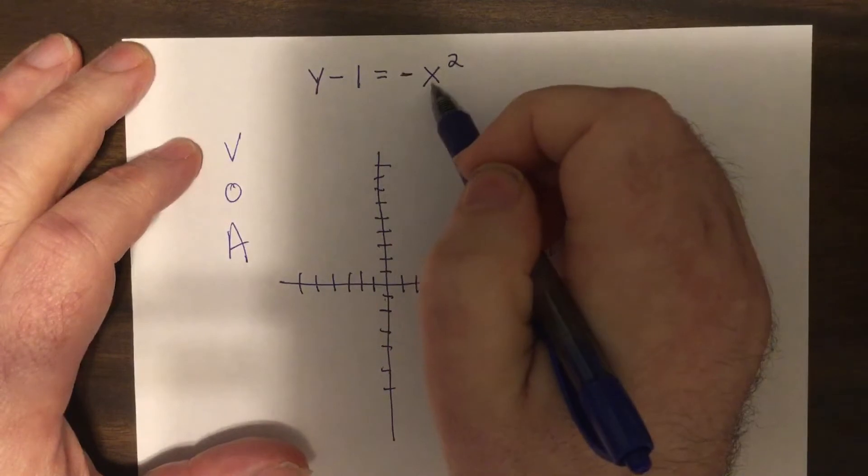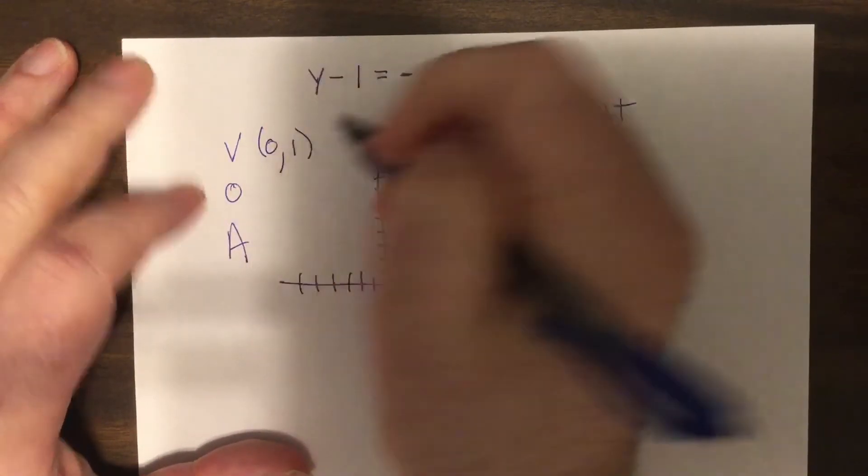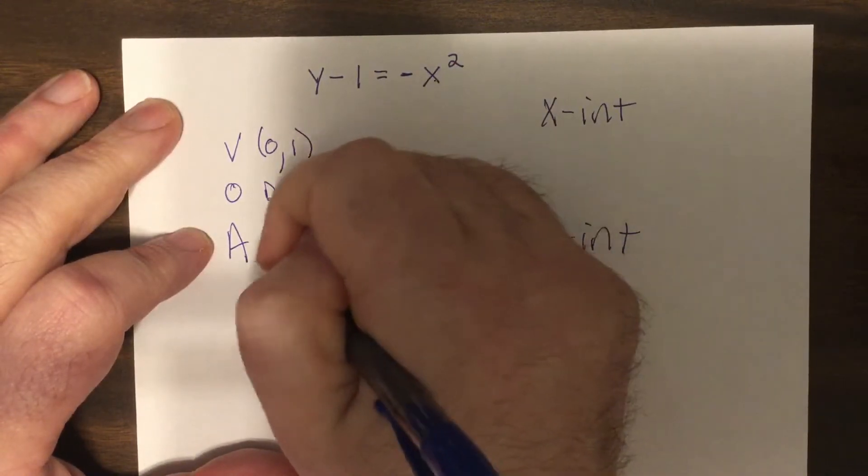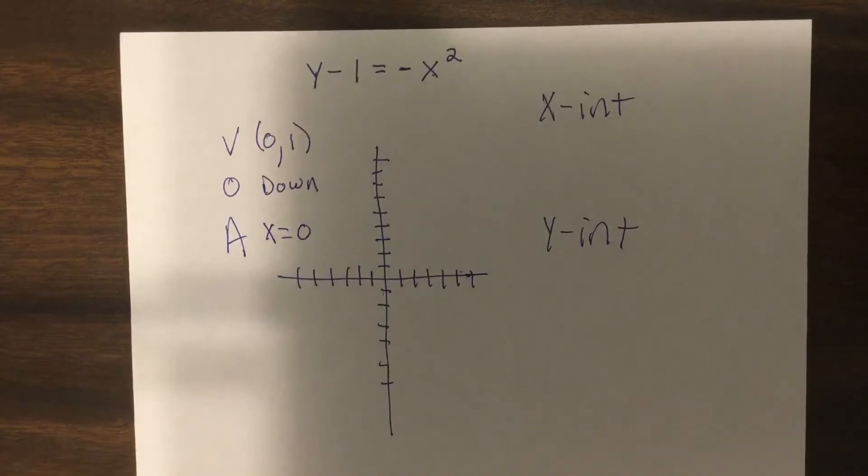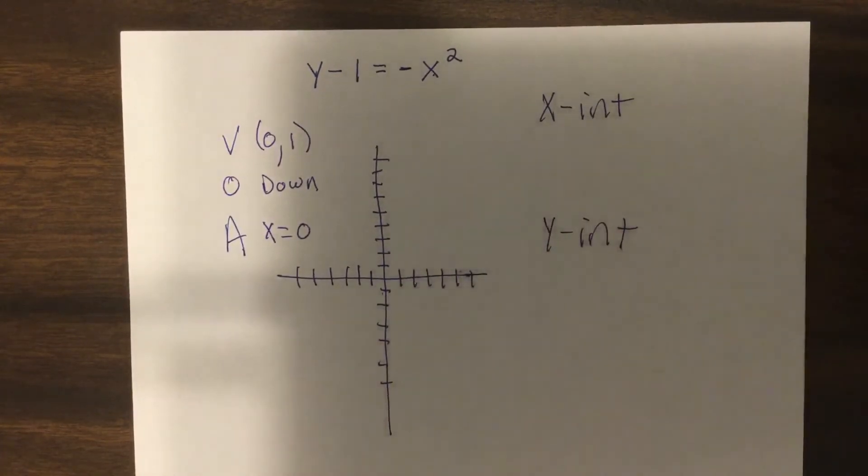So my VOA would be zero one. Oh, it opens down. Now the axis is X equals zero. Now we've gone over this before. What's another name for X equals zero? The Y axis. I've seen that on national tests before. Oh my goodness.